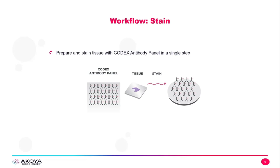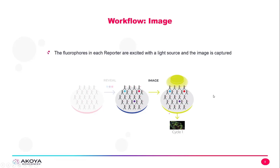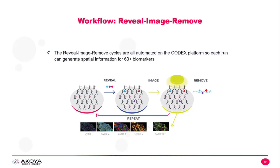Here's the first step of the CODEX workflow: we prepare and stain tissue with CODEX antibodies in a single step. At this point, all of the antibodies are bound and fixed to the tissue. We use the reveal step to find where our antibodies have bound to their target antigens. In the reveal step, these oligo-bound fluorophores — CODEX reporters — hybridize to the reverse complement conjugated to the antibody. We then record where these reporters have bound by imaging the sample, and then remove these reporters so that we can repeat the process. In this way, we capture all of our markers using CODEX.